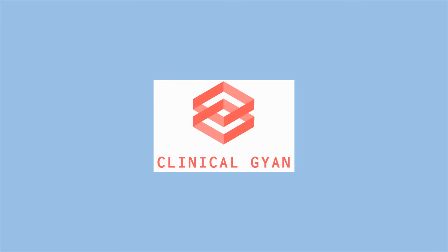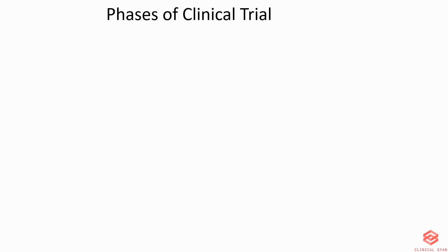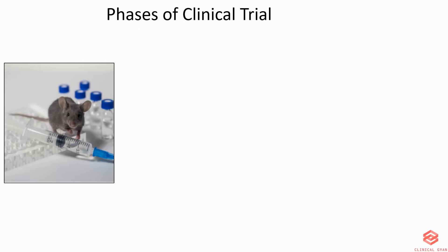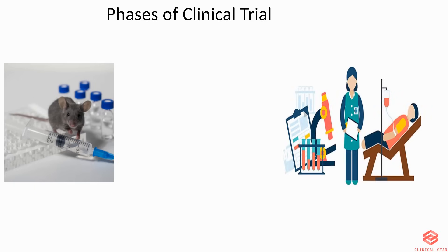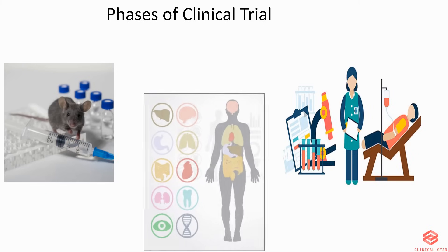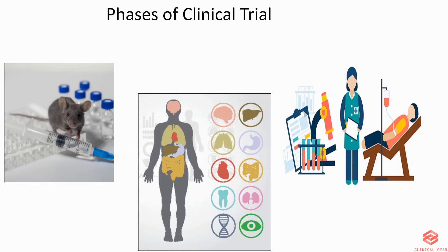Welcome to Clinical Game. Thank you for all your views and likes for the previous video. Today's topic is phases of a clinical trial. Trials can take place only after satisfactory information has been gathered from the preclinical or animal studies. While preclinical research usually provides some general information about dosing, the effect of a medication on the human body can be unpredictable. There are different phases depending on the drug or device.